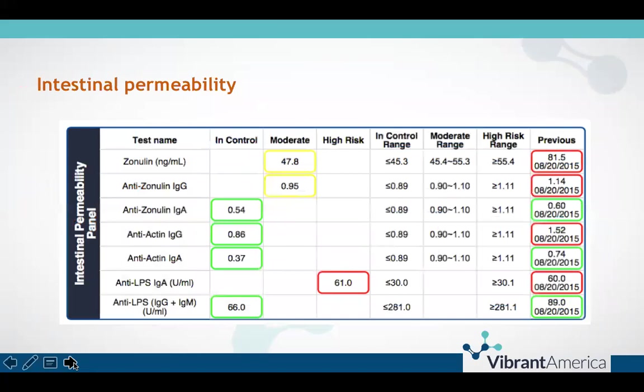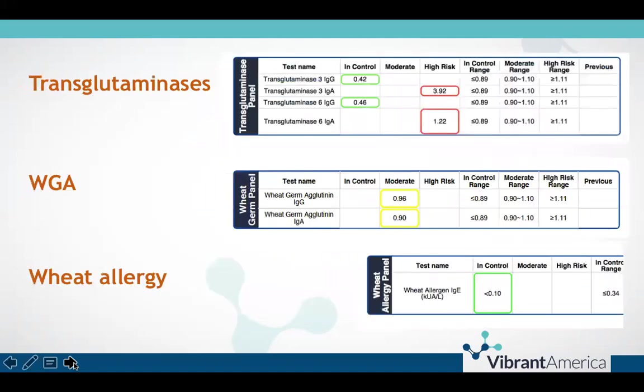Following that on the first page, we have the intestinal permeability panel, which today's module will dive into in great detail about the mechanisms behind intestinal permeability and loss of barrier integrity. Next, we look at differential transglutaminases that relate to integumentary and neurological gluten-mediated autoimmunity — TTG3 and TTG6, respectively. Then the lectin component of wheat, which is wheat germ agglutinin, and actual wheat allergies mediated by IgE mast cell reactions.